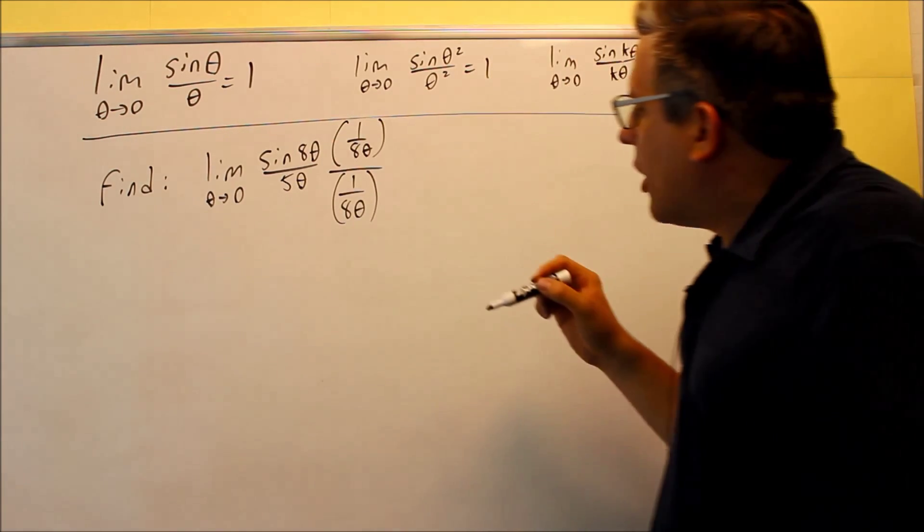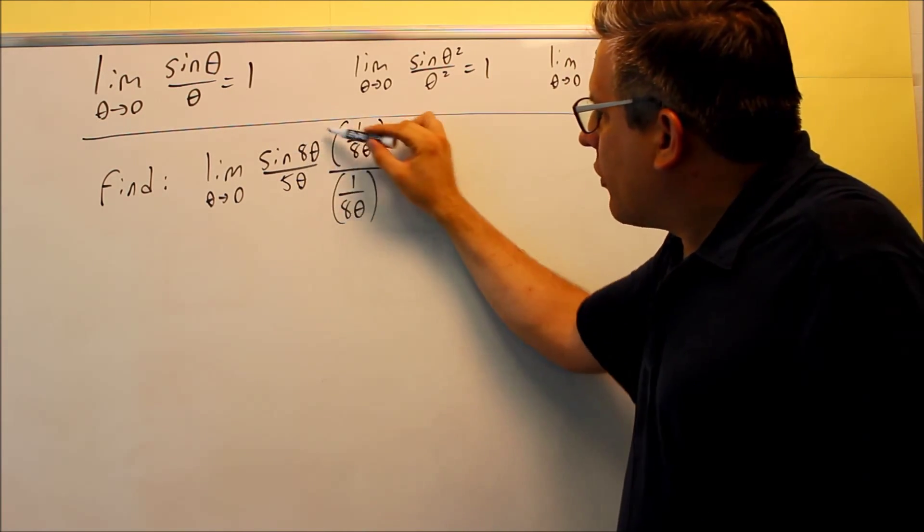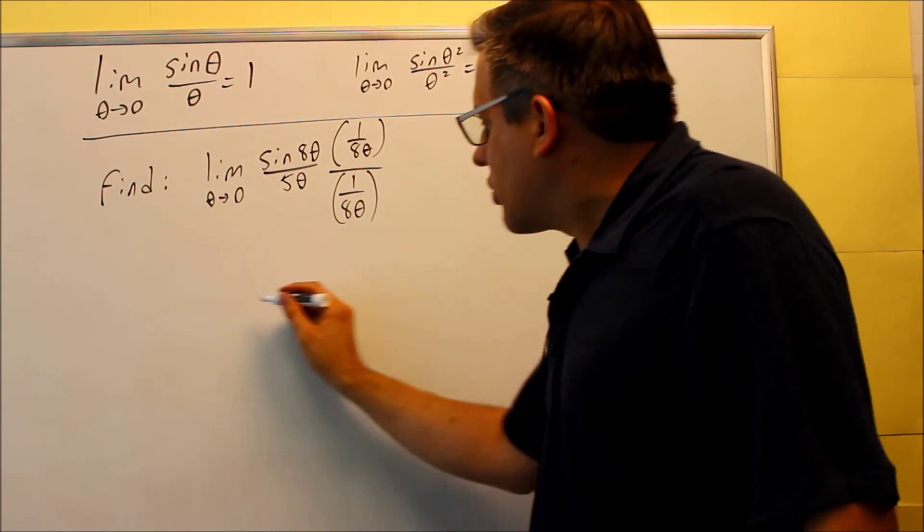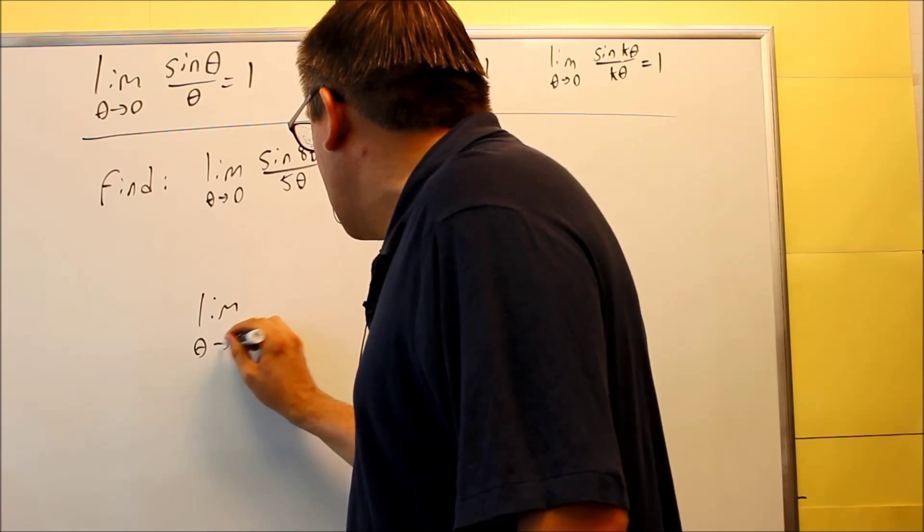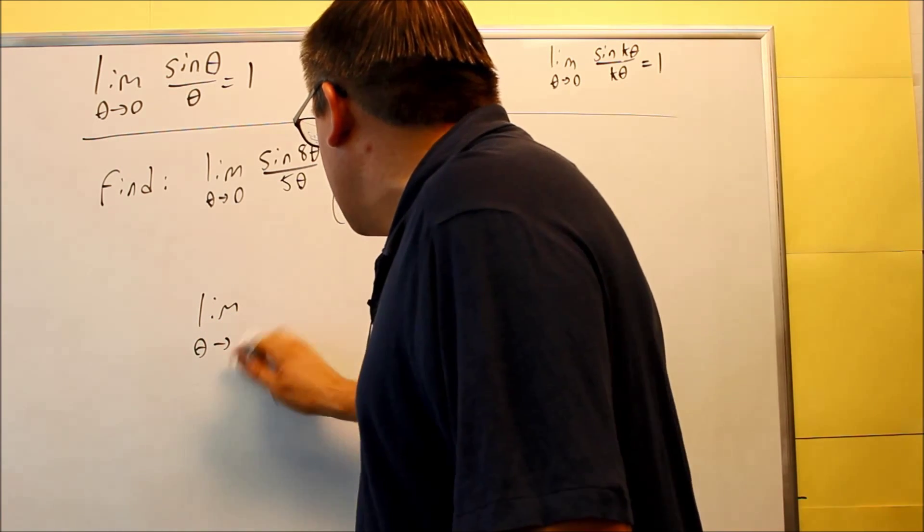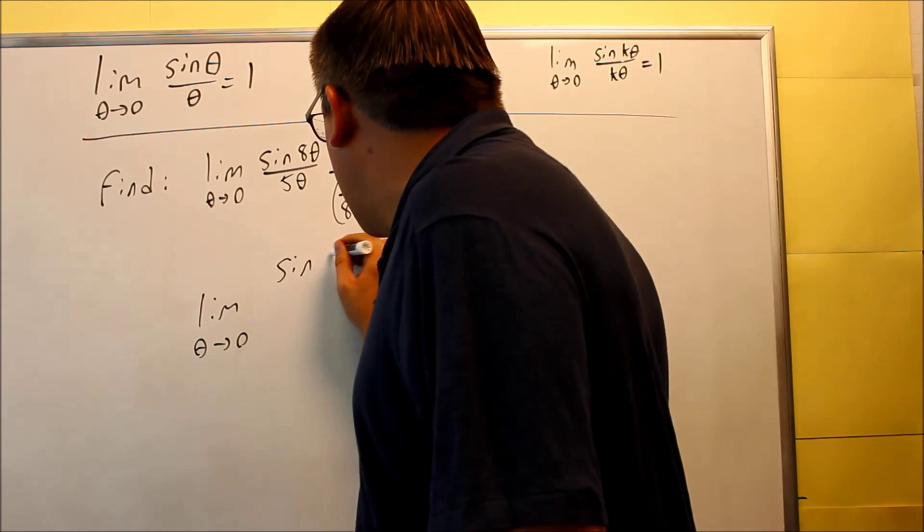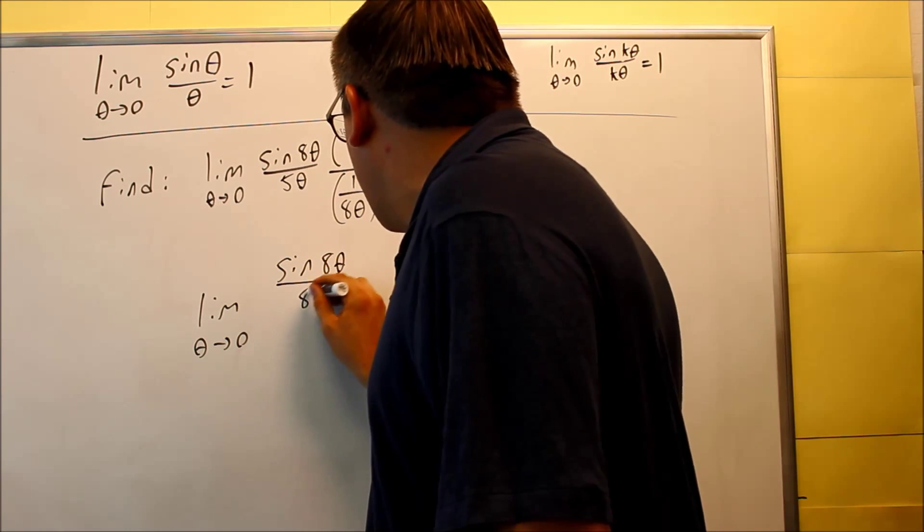So I do that for top and bottom purposely. I'm picking whatever thing is inside the sine, that's what I'm using for top and bottom. So here's what it looks like once you multiply that. You're going to create a double fraction in this case. And so when you do that on top, you're going to have sine of eight theta over eight theta.